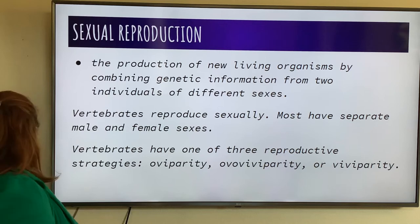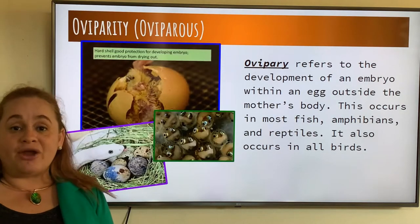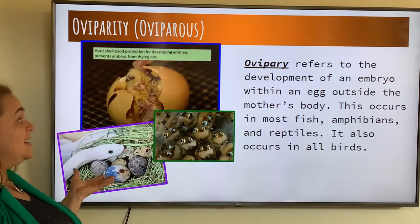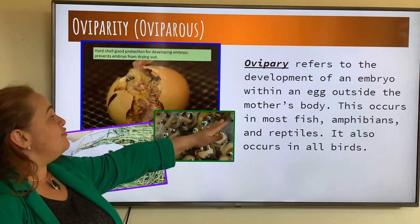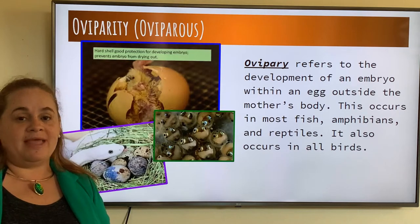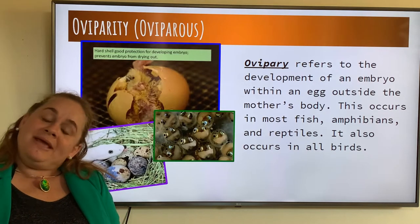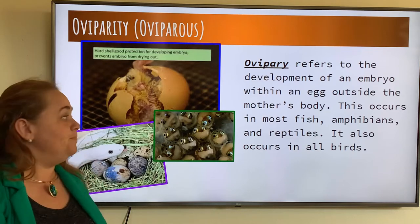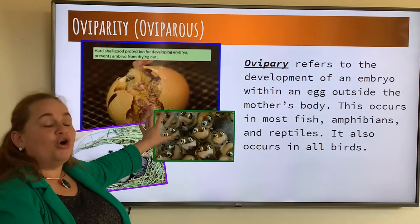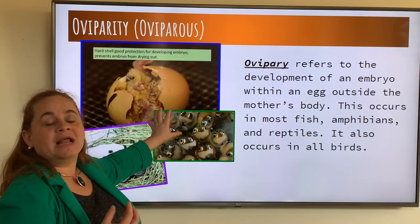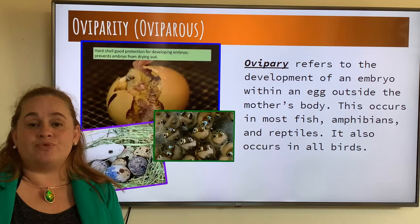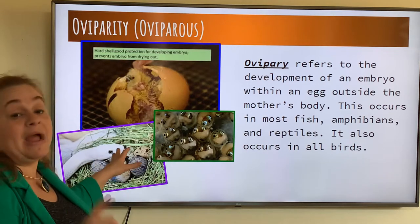Vertebrates have three strategies. Let's start with the first one: oviparity, or what we say they are oviparous. These are the animals that lay eggs. It refers to the development of the embryo outside of the mother's womb, meaning that little baby is growing outside of the mom's body. Usually it is protected by a hard or leathery shell. This is the case for birds, reptiles, fish, and amphibians.